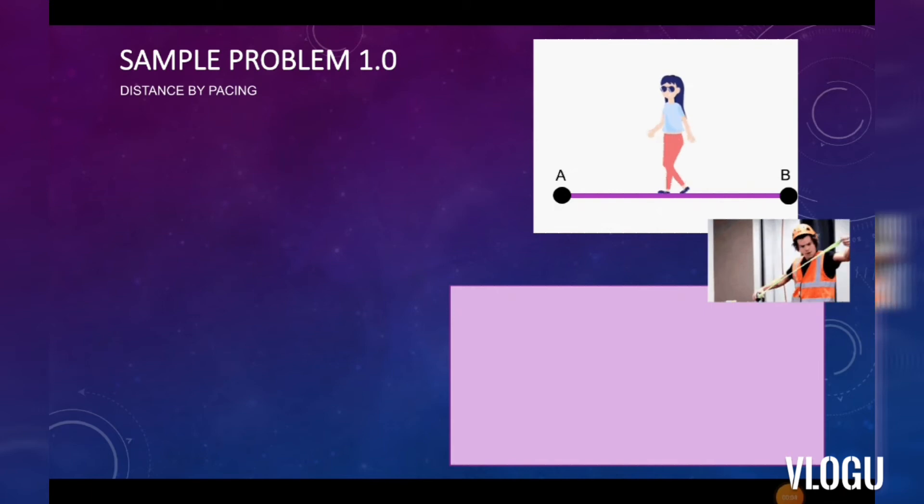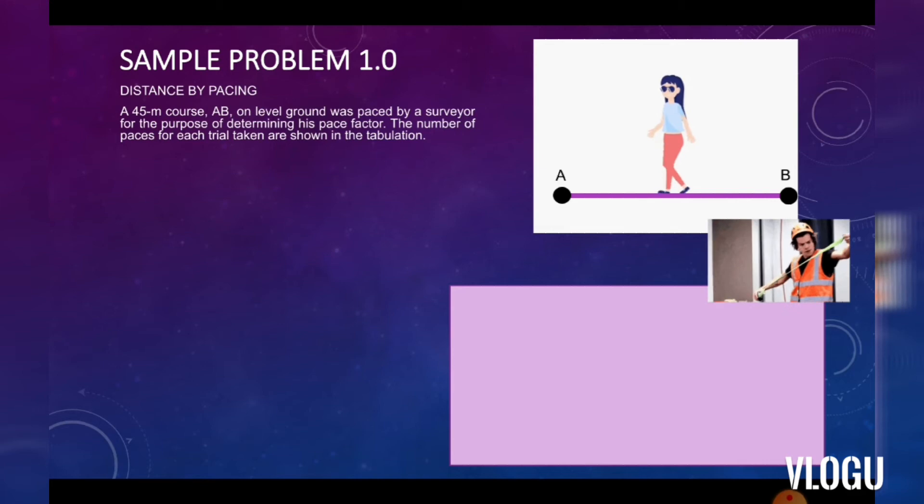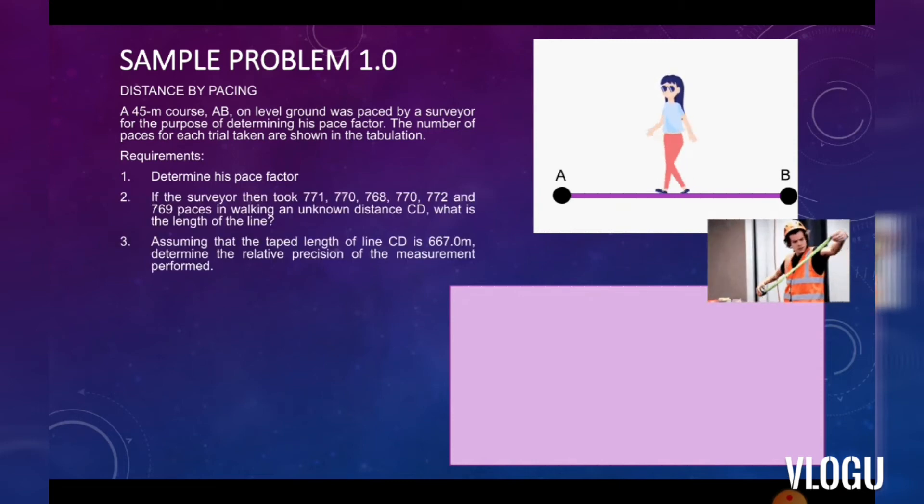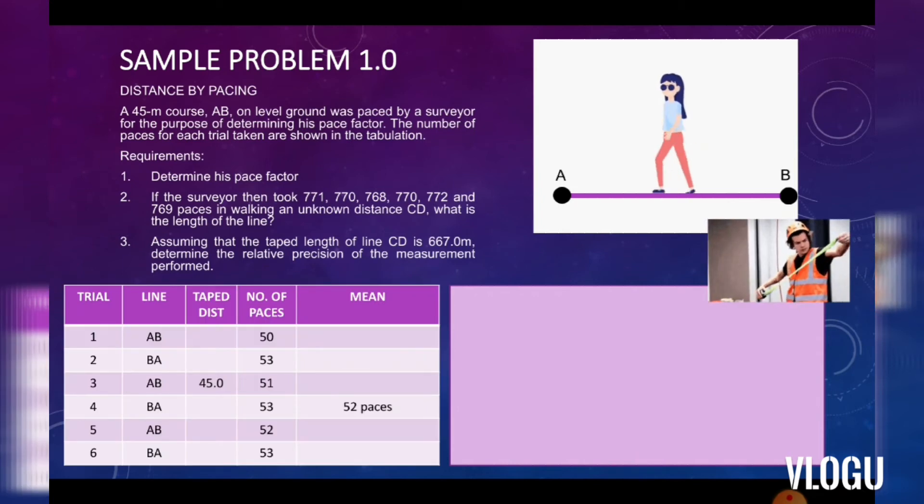For our first sample problem, distance by pacing. A 45-meter course AD on level ground was paced by a surveyor for the purpose of determining the pace factor. The number of paces for each trial taken are shown in the tabulation. First requirement is the pace factor. These are the given, as you can see.